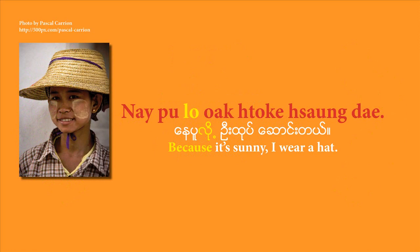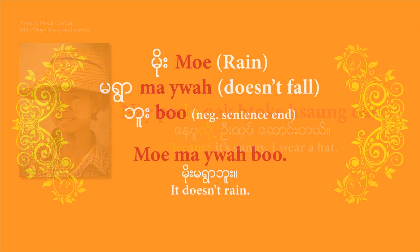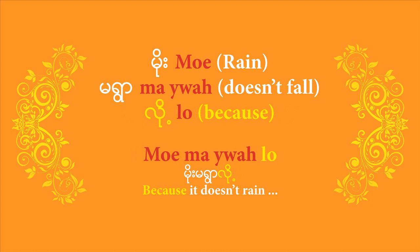It's also useful to look at how you use 'lo' with negative sentences. Take 'mo me joare bu' — it's not raining. 'Mo' is rain, 'me joare' is the negative form of the verb, meaning doesn't rain, and 'bu' is the negative sentence-end particle. To turn this into a 'because' phrase, you drop 'bu' and replace it with 'lo'. So instead of 'mo me joare bu', you say 'mo me joare lo' — because it doesn't rain.